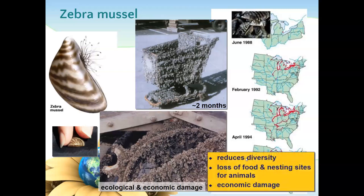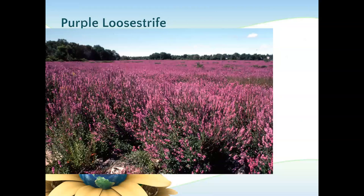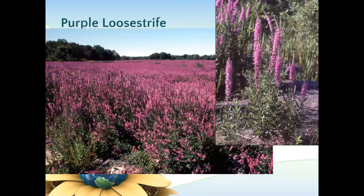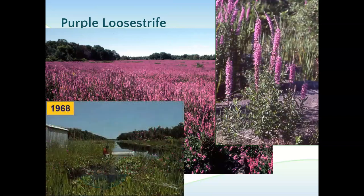Zebra mussels accumulate on boats and pontoons. It's reducing diversity — taking away many of the organisms within the community. Species diversity is going to be a big thing in any FRQ — diversity is a good thing, so anything that decreases diversity would be a negative effect. It also creates a loss of food and nesting sites for other organisms. The purple loosestrife in the Lake Lansing area is quite pretty, but it is decreasing the diversity of the area, making the food web much less complex.